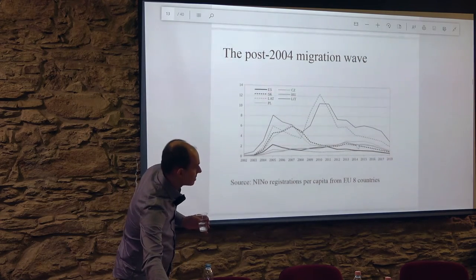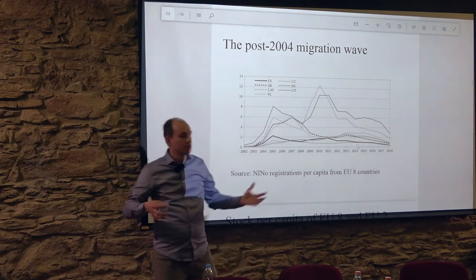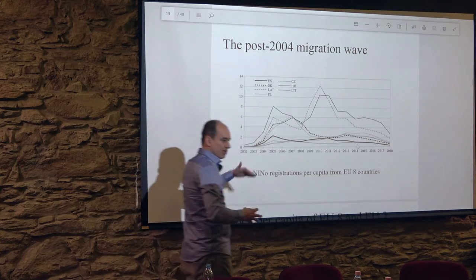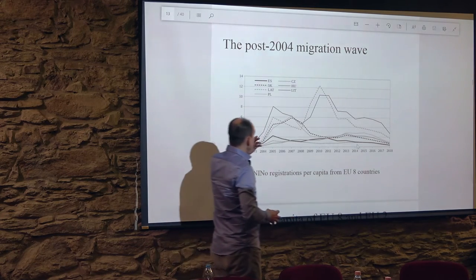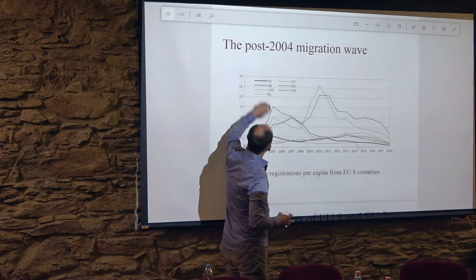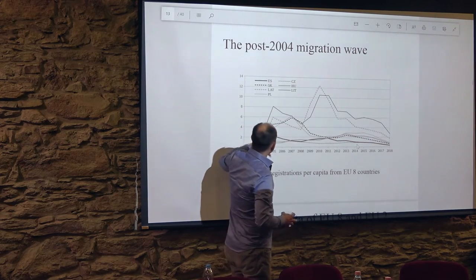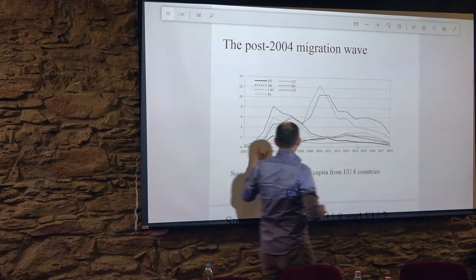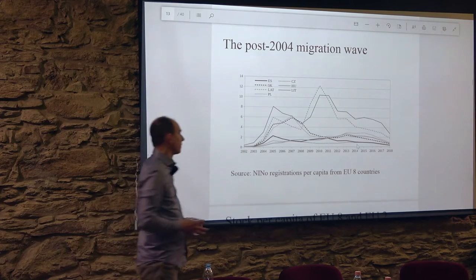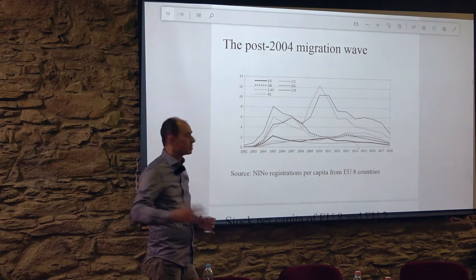More interesting for migration research is the per capita perspective. Taking into account that Poland has 40 million inhabitants and Slovakia has 5 million, and dividing the figures by country size, we see that Latvia and Lithuania are actually at the top. There is almost no migration from Slovenia to the UK, even per capita given that Slovenia is a tiny country with 2 million inhabitants.